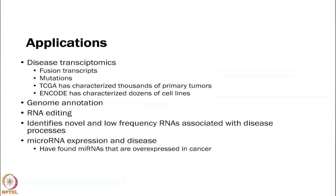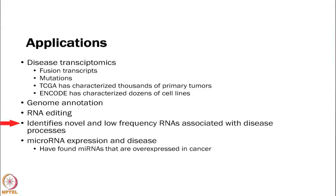There are a lot of applications for RNA-seq — it is very popular right now. You can look for fusion transcripts, mutations, and the TCGA has used RNA-seq to characterize thousands of tumors. ENCODE has also characterized dozens of cell lines. You can look at annotation of genomes — how genomes are actually structured — and identify RNAs associated with disease. You can also look at micro-RNAs, which takes a different sample prep process, but once isolated you can sequence them and look at how they are expressed in different diseases.